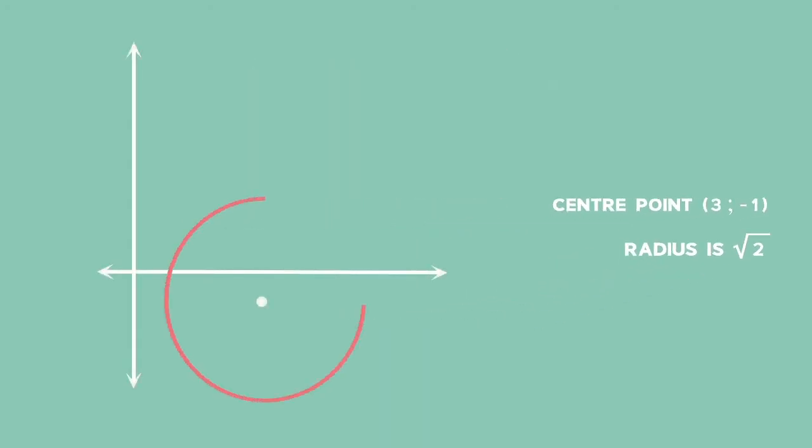We can label the centre O and place it at point (3, -1) on the Cartesian plane. The point (6, -2) is on the tangent. We can label it A. Label the point of contact between the circle and the tangent B.